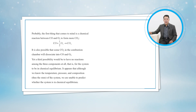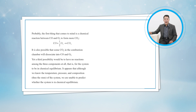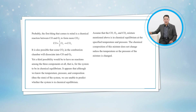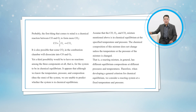That is, for the system to be in chemical equilibrium. It appears that although we know the temperature, pressure, and composition of the system, we are unable to predict whether the system is in chemical equilibrium. Assuming that the carbon monoxide, oxygen, and carbon dioxide mixture is in chemical equilibrium at the specified temperature and pressure, the chemical composition does not change unless the temperature or pressure of the mixture is changed. A reacting mixture in general has different equilibrium compositions at different pressures and temperatures.